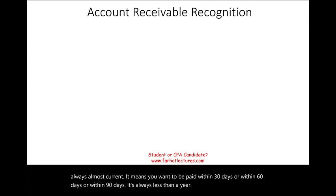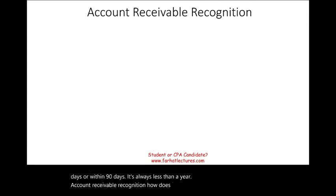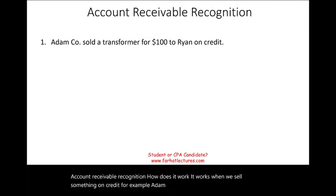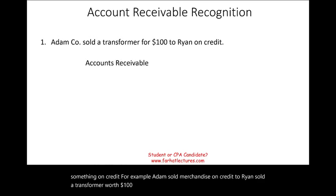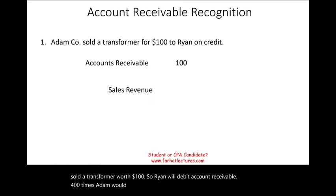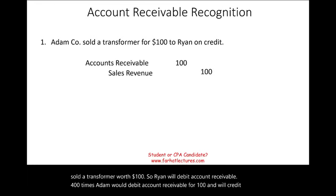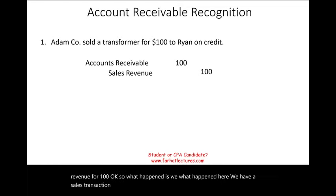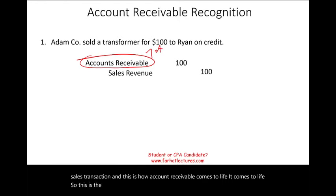Account receivable recognition: it works when we sell something on credit. For example, Adam sold merchandise on credit to Ryan — a transformer worth $100. Adam will debit accounts receivable for $100 and credit sales revenue for $100. This is how account receivable comes to life — it's the first step in the life of a receivable.